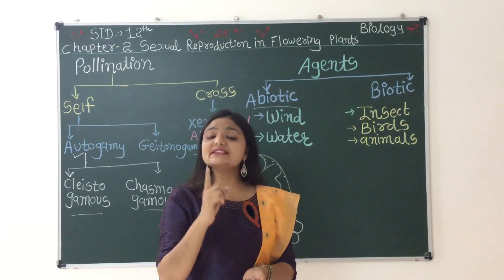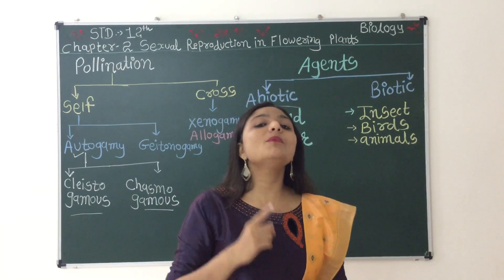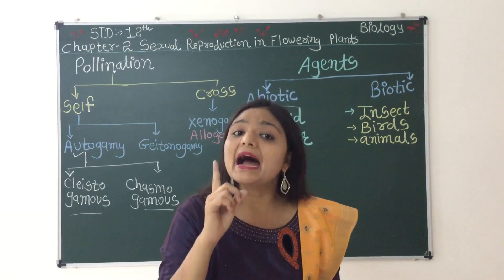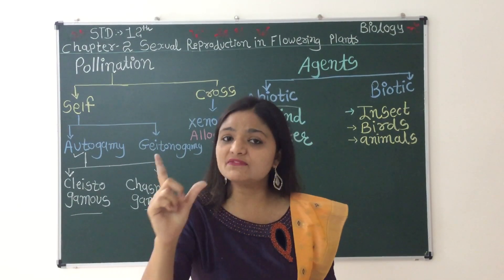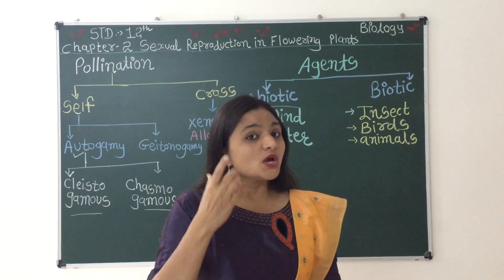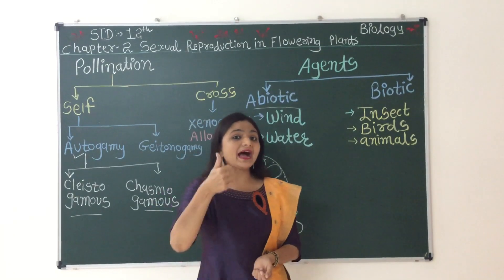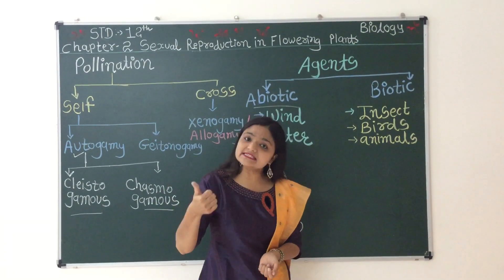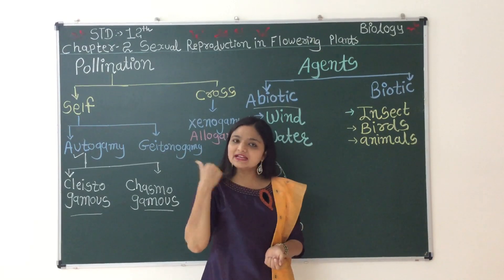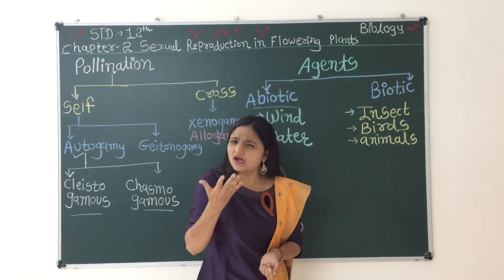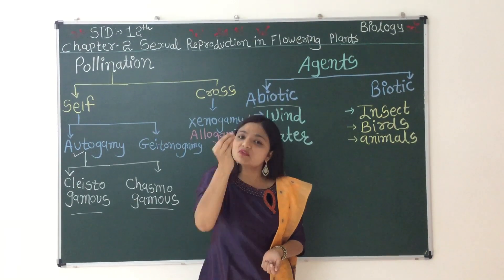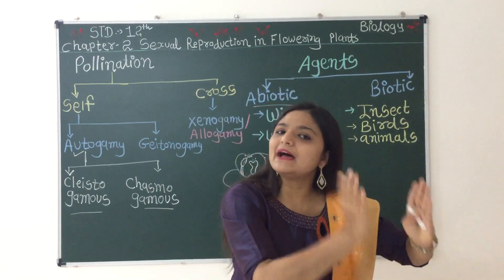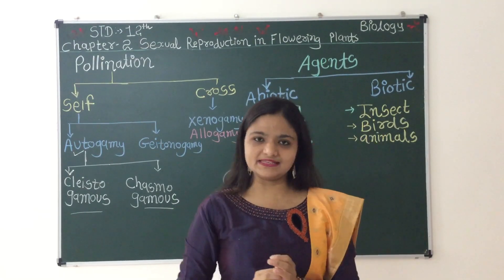The pollination done by water — water se jo pollination hoti hai — is called hydrophily. Hydro means water. Examples include Hydrilla and Vallisneria. In all of these, pollination occurs through water. However, among abiotic agents, wind pollination is more common than water pollination.